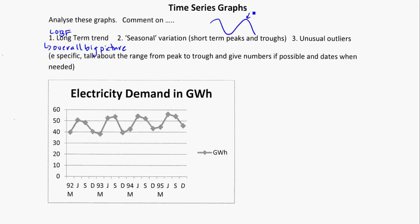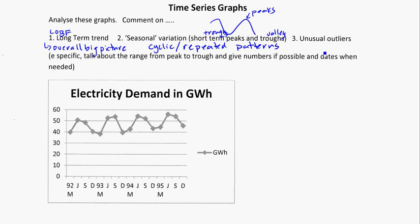If you imagine mountains and valleys, peaks are the tops and troughs are the valleys — the low points. Seasonal variation could be things we see happen every summer and winter. They can also just be short-term variation; it doesn't necessarily have to do with the seasons. These are the cyclic or repeated patterns we'll see happen over and over again. And any unusual outliers — similar to scatter graphs — anything that's outside of the trend.